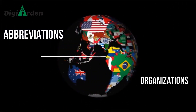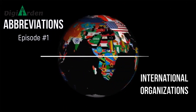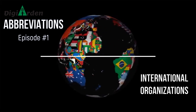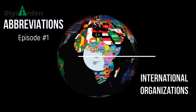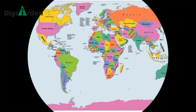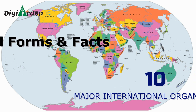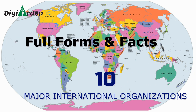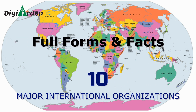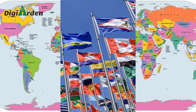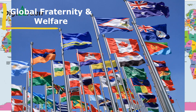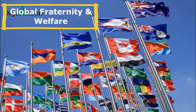Hello friends. In this episode we shall reveal the respective full forms of some of the abbreviations and their related information. These may help you to develop your general knowledge in educating your kids as well. Here are full forms and facts of 10 major international organizations. These organizations are committed towards global fraternity and welfare.